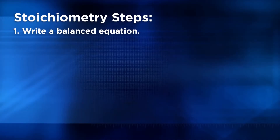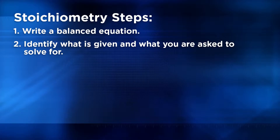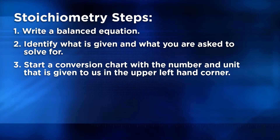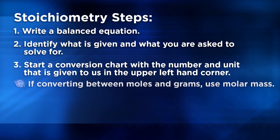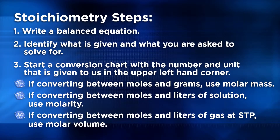So let's look at the steps required when performing a stoichiometric calculation. Step 1: always first write a balanced equation or at least verify the one we are given is, in fact, balanced. Step 2: identify what is given to us in the problem, units included, as well as what you're asked to solve for. Step 3: start a conversion chart with the number and unit that's given to us in the upper left-hand corner — let the units guide the conversion. If converting between moles and grams, use molar mass. If converting between moles and liters of solution, use molarity. If converting between moles and liters of gas at STP, use molar volume.